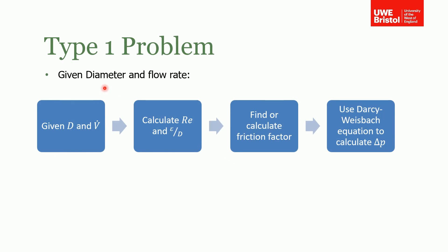Dealing with the Type 1 problem first — it's fairly straightforward. If we know the pipe diameter and the volumetric flow rate and all we need to do is calculate the pressure drop, then we can calculate the Reynolds number because we know the velocity from the volumetric flow rate and diameter. We can also calculate the relative pipe roughness, and from that we can calculate the friction factor from the Moody diagram or from the equations. Once we have that, we plug the values into the Darcy-Weisbach equation to calculate delta P — fairly straightforward.